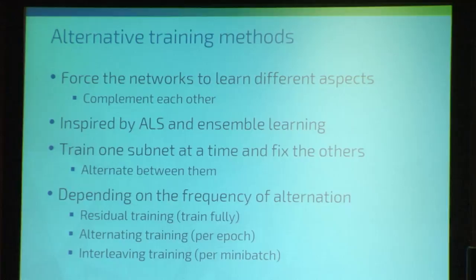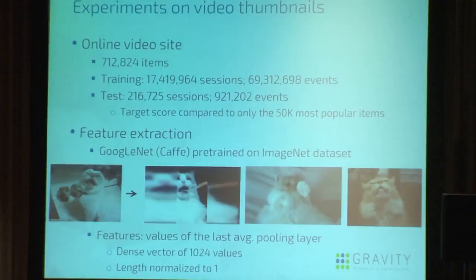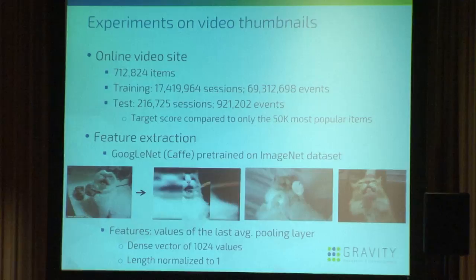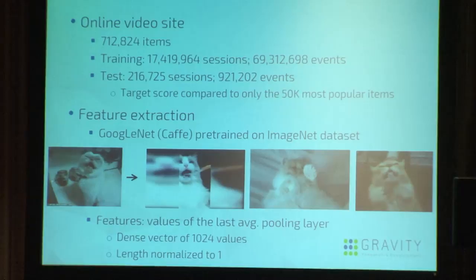Now I'll move on to experiments. The first experiment was on an online video site, much like YouTube but not YouTube. We had around 700,000 items, 70 million events in 17 million sessions — quite a big dataset. In the test set, we had around a million events to validate. Because of the high number of events, we compared the score of the relevant items only to the top 50,000 most popular items in order to do the evaluation faster.